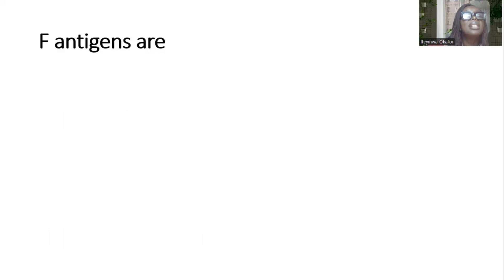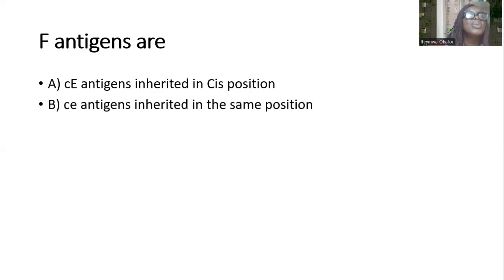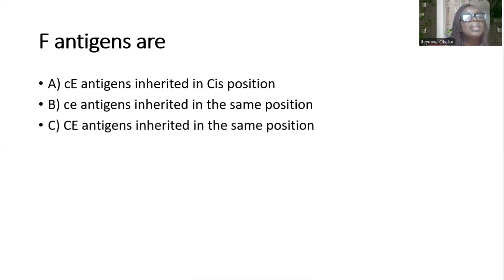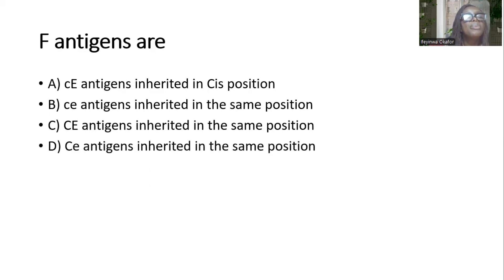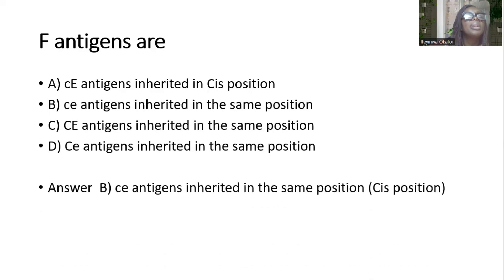Which antigens are the f antigens inherited in the same position? Options include: little c and big E; little c and little e; big C and big E. And the answer is B — the f antigens are little c and little e antigens inherited in the same position, which is the 6th position.